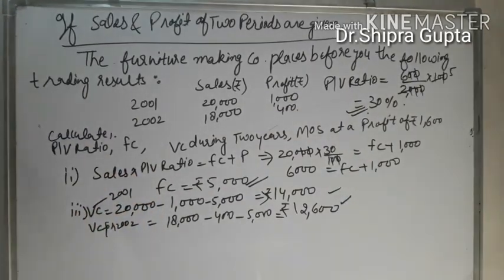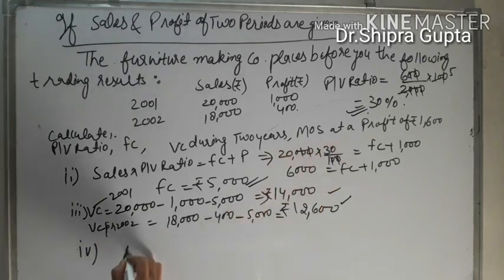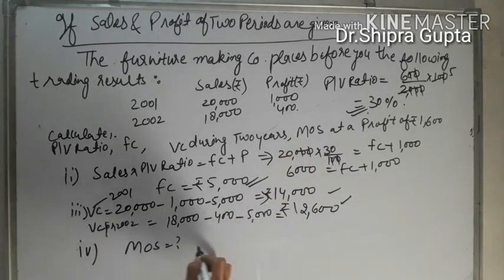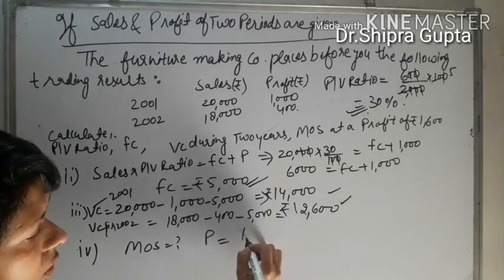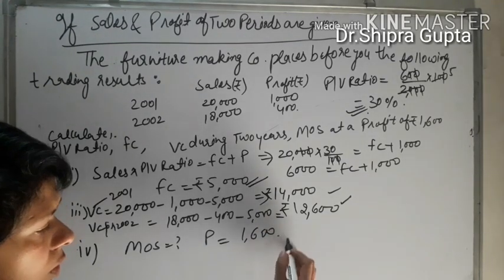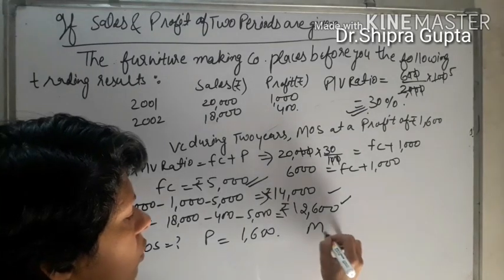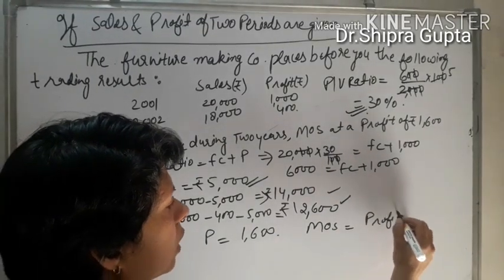Now we will calculate the next point: margin of safety. Profit of rupees 1,600 is given. Margin of safety equals profit upon PV ratio.